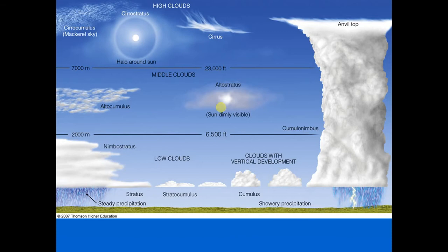Another clue is shadows — cirrostratus is transparent enough for the sun to produce shadows, whereas you won't see your shadow under altostratus. Altostratus clouds can form ahead of storms containing relatively continuous precipitation. Altostratus cannot produce rainfall — it may produce some snow flurries or drizzle — but if its base lowers, it can turn into nimbostratus.